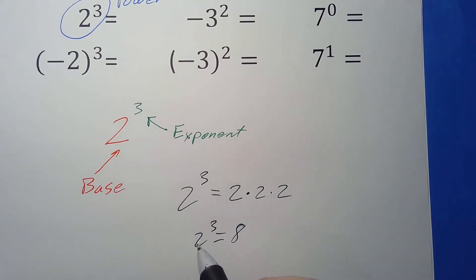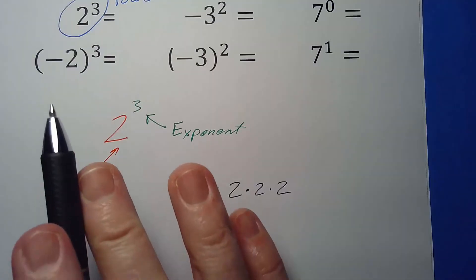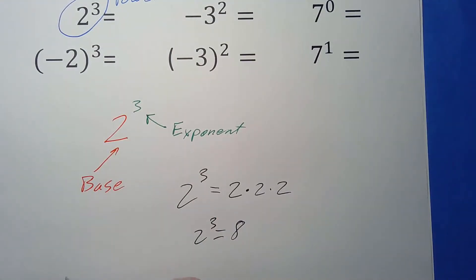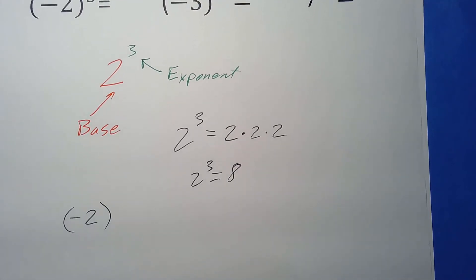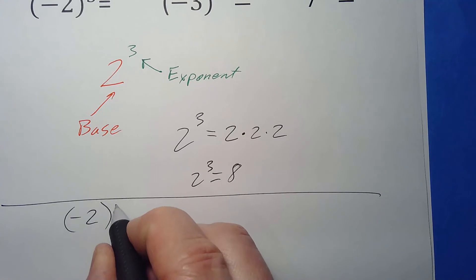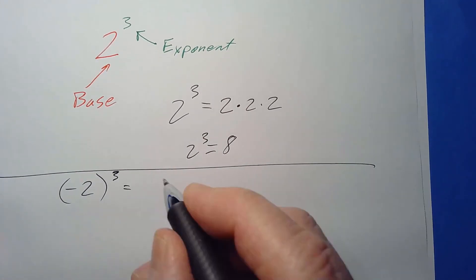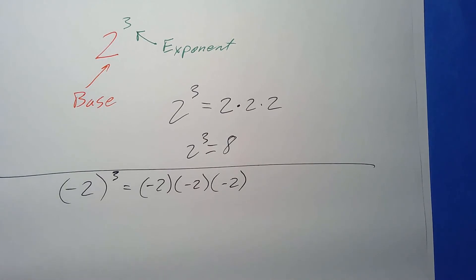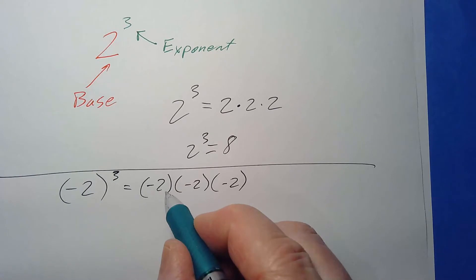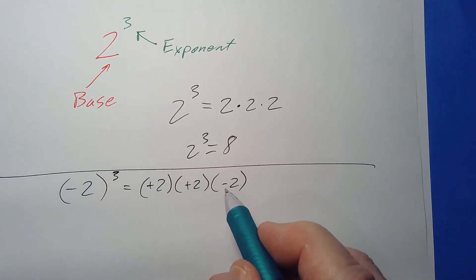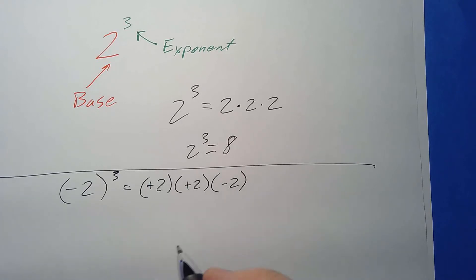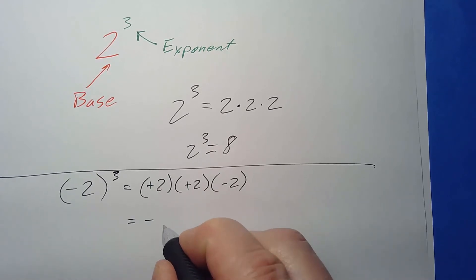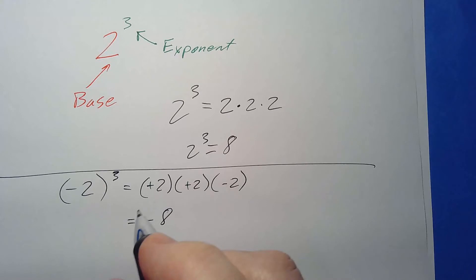Now let's look at negative two to the third. Notice the parentheses — because of those parentheses, what's inside gets used over and over again. So this is negative two times negative two times negative two. A negative times a negative gives a positive, so those two cancel, but there's still another negative left. So we get negative eight — negative two to the third equals negative eight.